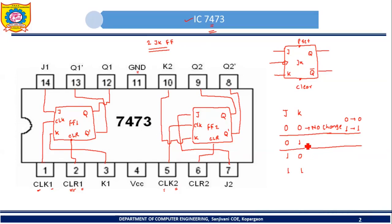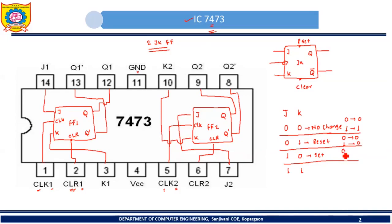If J is 1 and K is 0, it is called the set condition. It indicates that if the present state of JK flip-flop is 0, the next state will be 1. If the present state is 1, the next state will remain 1. So when J is 1 and K is 0, the next state of JK flip-flop will always be 1, that's why it is called the set condition.